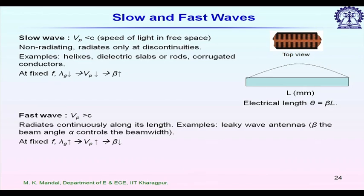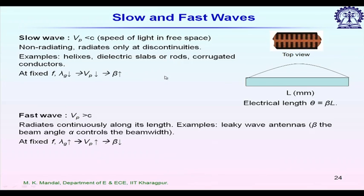If any wave guiding structure supports a slow wave, it is usually a non-radiating mode. It will guide the transmission mode through the structure and radiate only at discontinuities. Whenever we design any wave guiding structure like a microstrip line or CPW line, we expect slow wave behavior so there is no radiation from the structure. This must be kept in mind when designing components at millimeter wave as well as microwave and RF frequencies.